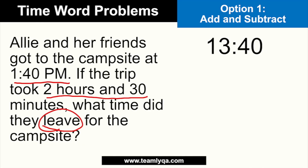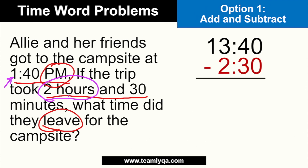Now, start with the time. I put 13:40 here — that's the military time version of 1:40 PM. Why did I do that specifically for this problem? Because the value you're subtracting is 2 hours, and 2 hours is more than 1 hour and 40 minutes, meaning you'd need to borrow — which means the answer will be sometime in the morning. So, 13:40 minus 2:30. Since 40 minus 30 is fine, and 13 minus 2 is 11, the answer is 11:10 AM. This would be more complicated if you wrote it as 1:40 minus 2:30, because it would look like a negative result.